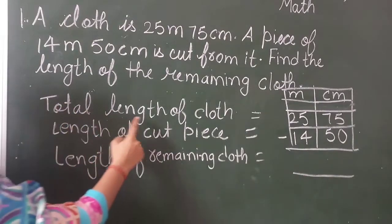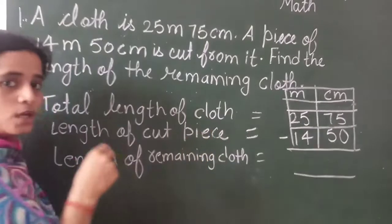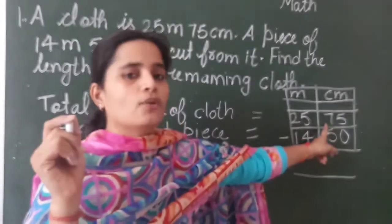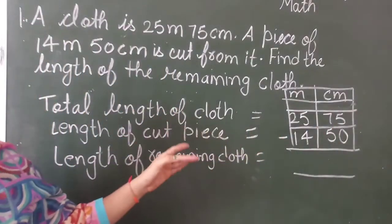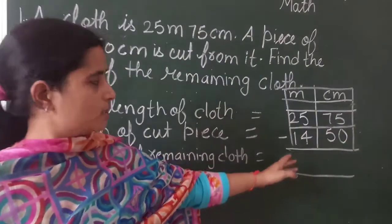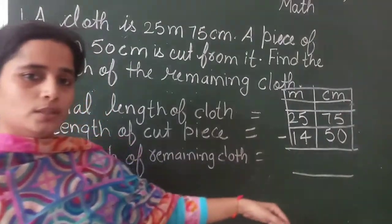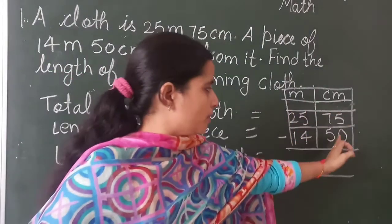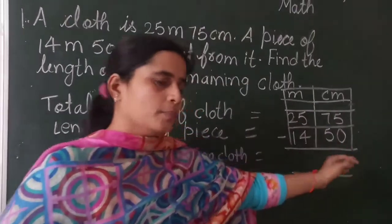So first of all we will write total length of cloth. So the total length of cloth is 25 meter and 75 centimeter. Whenever you are writing these you have to remember one thing. Meter you have to write under this and centimeter you have to write under the centimeter column.